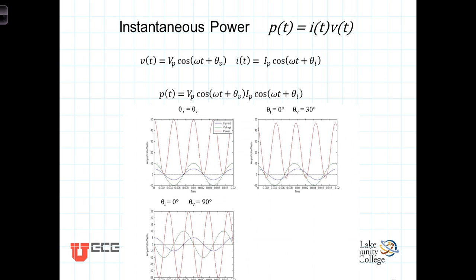In systems that are driven by AC signals or AC sources, both the current and the voltage are functions of time. Thus, power, which is equal to the product of the current times the voltage, will also be a function of time. We're going to refer to this time function of power as the instantaneous power. In general, the current and the voltage will not have the same phase angles.